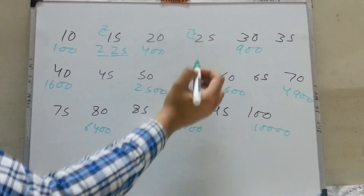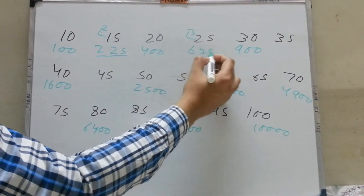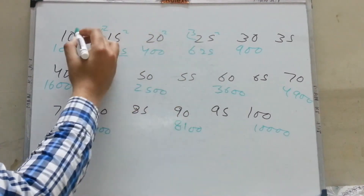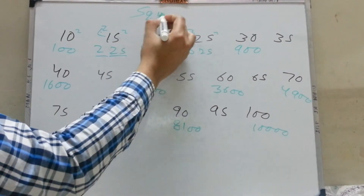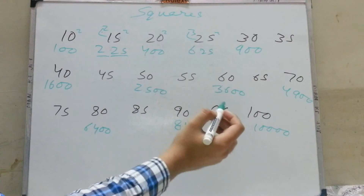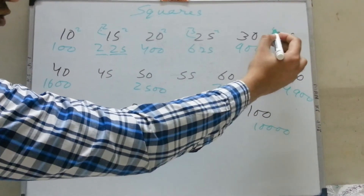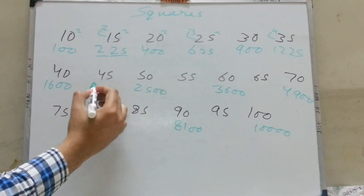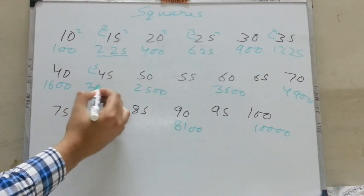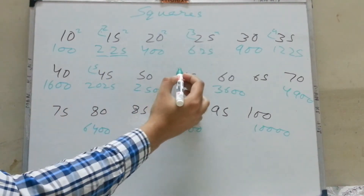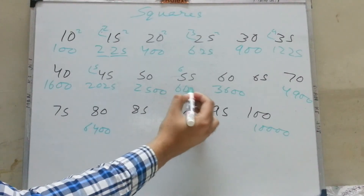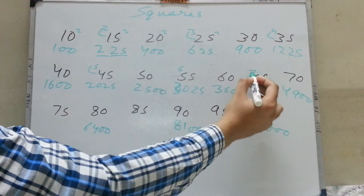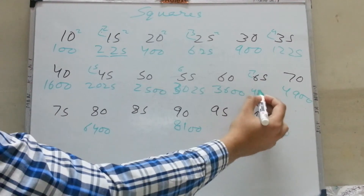For 25 squared, multiply 2 with 3, answer is 6, so 625. The square of 35 is 3 times 4 — answer is 12 — giving 1225. Square of 45 is 4 times 5 = 20, giving 2025. Square of 55 is 5 times 6 = 30, giving 3025. Square of 65 is 6 times 7 = 42, giving 4225.